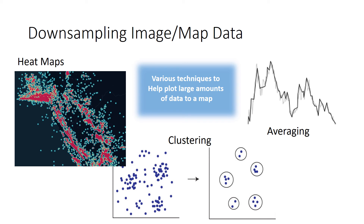Downsampling is another way that we can deal with high-volume data throughput. Plotting data to a map can be very memory and processor intensive, especially if you are trying to display a great deal of data such as the requirement for our problem. We have to display thousands of aircraft that are constantly moving. There are some techniques that can be used to help downsample the data and increase performance. Heat maps combine visual data when the distinct display of each object would be too crowded to make any sense at your current zoom level on the map.